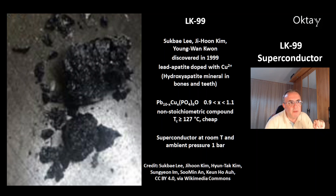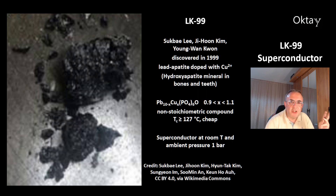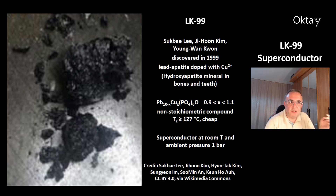This is the formula of LK99. The X is important — it has to be between 0.9 and 1.1, meaning about one tenth of the lead ions are replaced by copper ions. LK99 is lead copper phosphate oxide, and it is a non-stoichiometric compound.